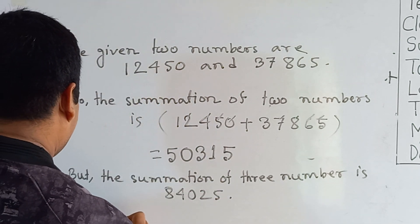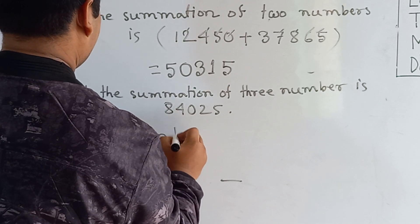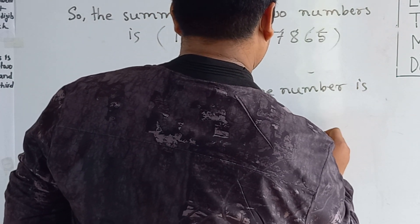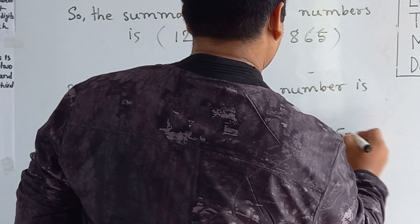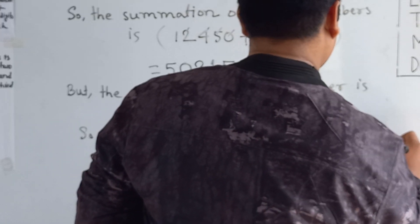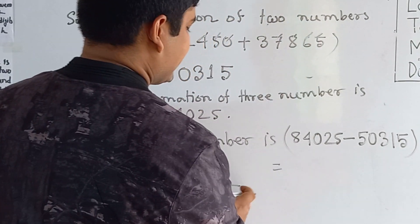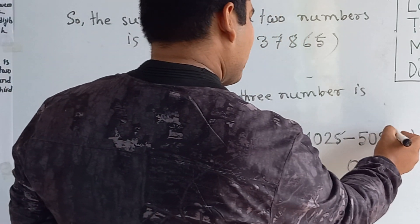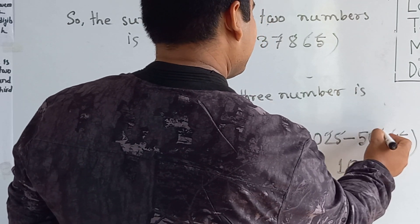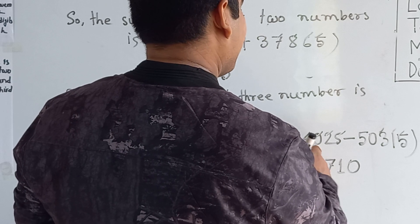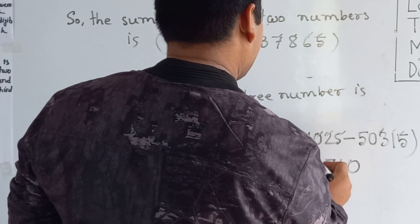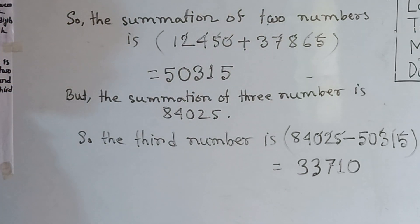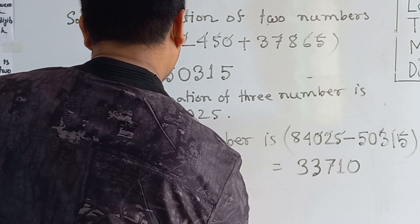So the third number equals 84,025 minus 50,315. 5 minus 5 is 0. 2 minus 1 is 1. 0 minus 3 needs borrowing: 10 minus 3 is 7, carry 1; that 1 added with 0 makes 1; 4 minus 1 is 3. 8 minus 5 is 3. So the answer is 33,710. This is the third number.